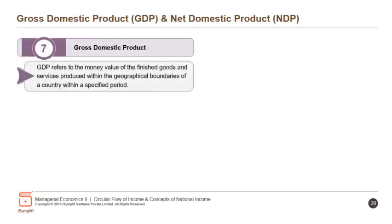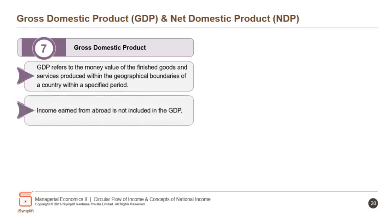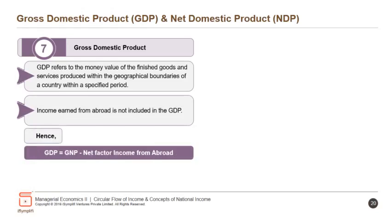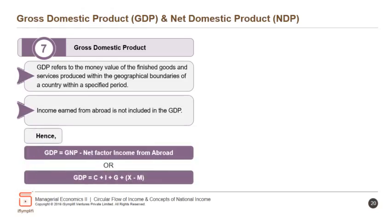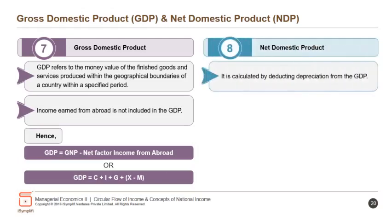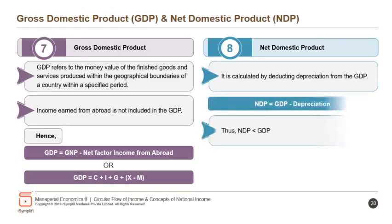Gross domestic product (GDP) refers to the money value of the finished goods and services produced within the geographical boundaries of a country within a specified period. Income earned from abroad is not included in GDP. Hence, GDP = GNP − net factor income from abroad, or GDP = C + I + G + X − M. Net domestic product (NDP) is calculated by deducting depreciation from GDP: NDP = GDP − depreciation.